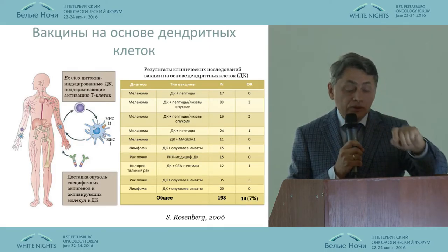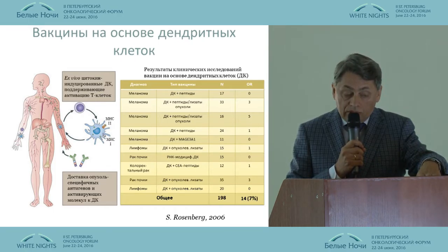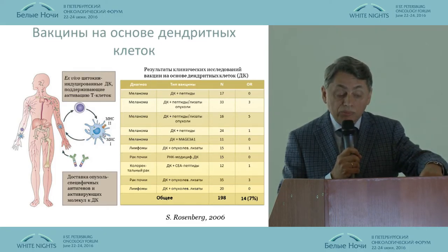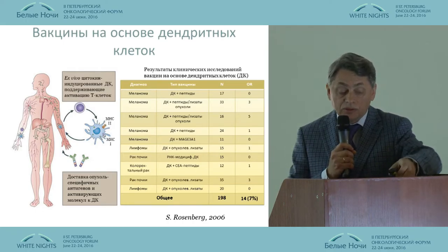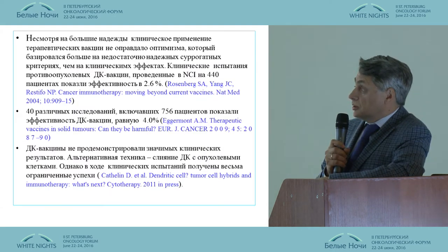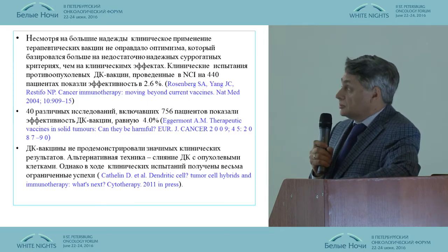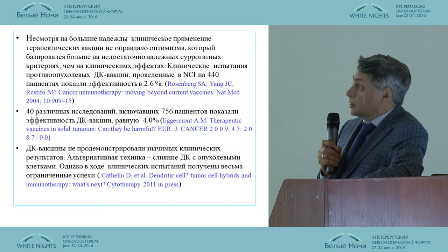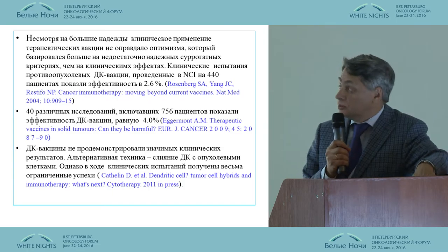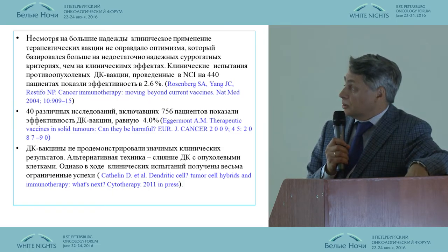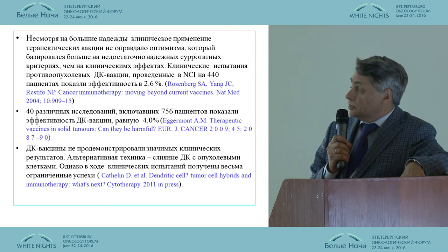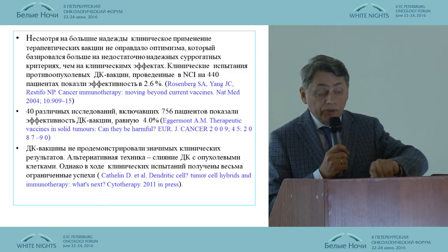The next stage was to develop a dendritic cell vaccine to stimulate adaptive immunity and produce an immune clone. However, clinical research showed that this strategy was poorly efficient. Results from Rosenberg in 440 patients showed that without natural surrogate criteria, efficiency does not exceed 3%, and the same stands for more extensive patient groups with efficiency of approximately 4%.